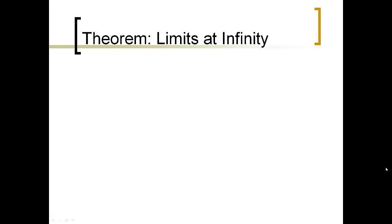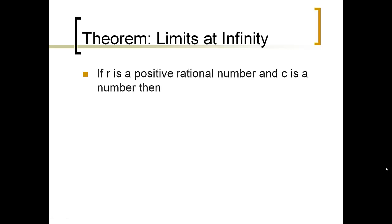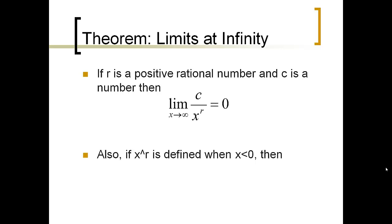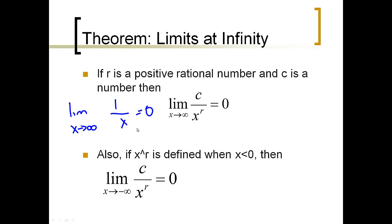Let's look at an important theorem: if r is a positive rational number and c is a constant, then the limit as x approaches infinity of c over x to the r power is going to be 0. That's because any number divided by what winds up being infinity is 0. This also holds true for negative infinity. For example, the limit of 1 over x as x approaches infinity is 0, and the limit of 7 over x squared as x approaches infinity is also 0 — in fact, it gets to 0 faster because we're squaring the denominator.